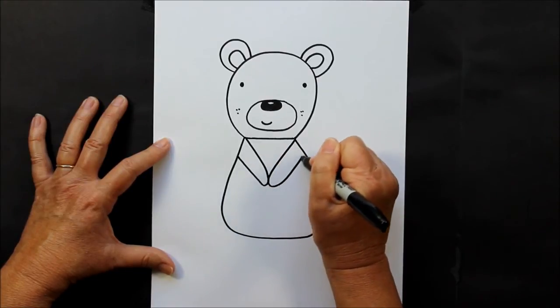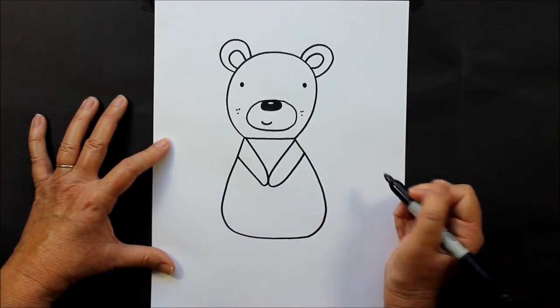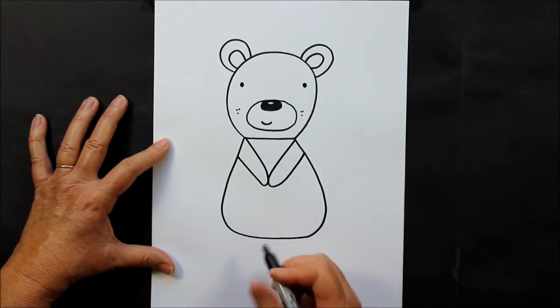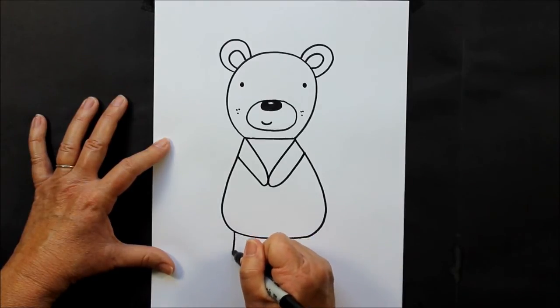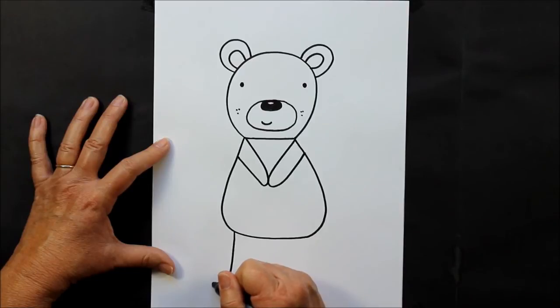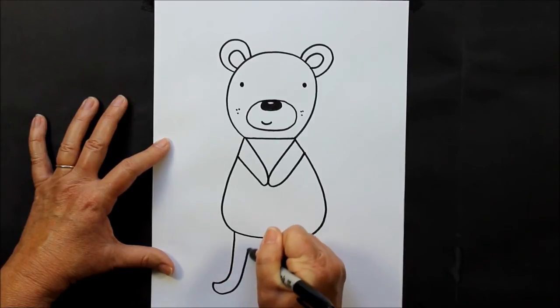Down here at the bottom you can make his legs, so straight lines down, curved over and come up. Straight line and come up.